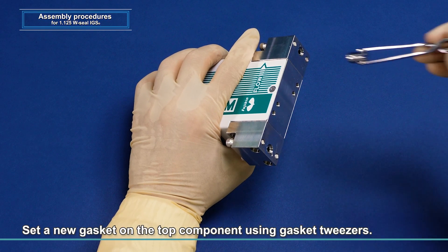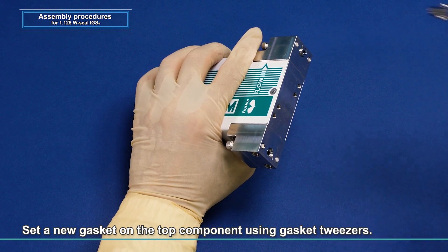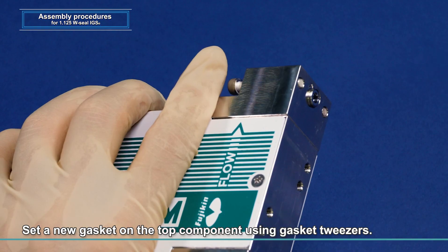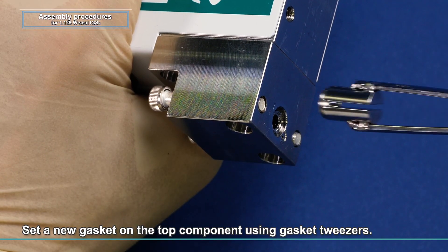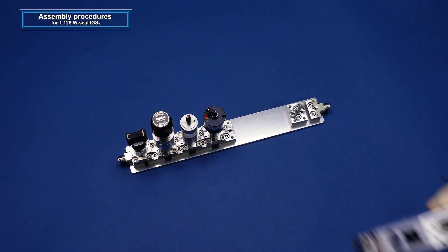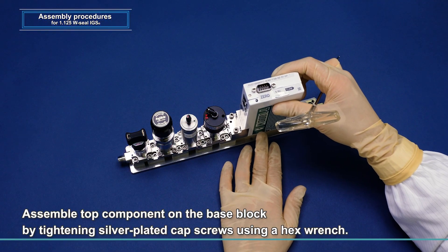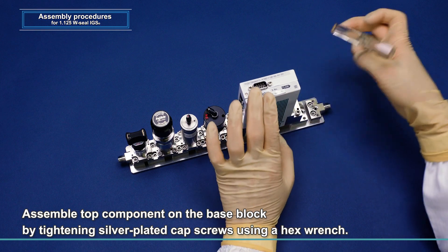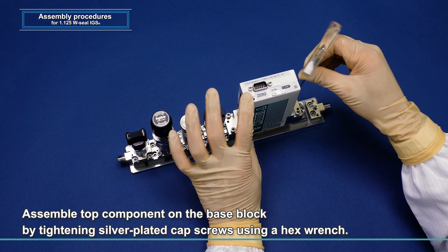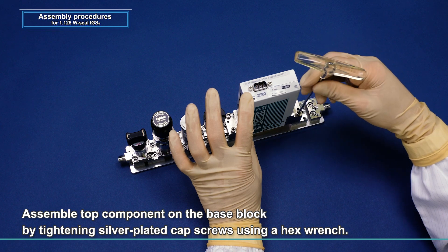Attach a gasket to the top component. Always use a new gasket and set it on top of the component using gasket tweezers. Using silver-plated cap screws, lightly assemble the top component on the base block. Tighten these screws using a hex wrench while taking care not to allow uneven tightening.